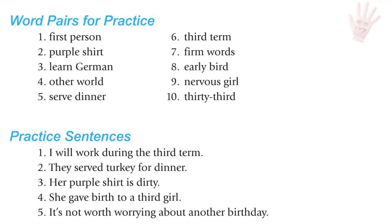Sentences for practice with UR: I will work during the third term. They serve turkey for dinner. Her purple shirt is dirty. She gave birth to a third girl. It's not worth worrying about another birthday.